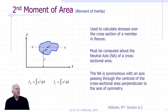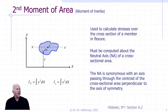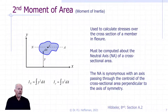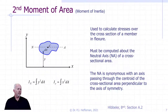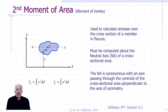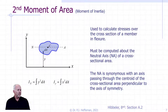We're going to use I to calculate normal stresses over the cross-section of a member in bending or flexure. By definition, it is calculated about the neutral axis of a cross-section. The neutral axis is synonymous with the axis passing through the centroid — we will prove that later — specifically the axis passing through the centroid of the cross-sectional area perpendicular to the axis of symmetry.